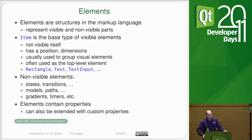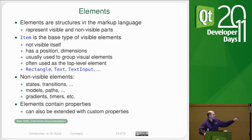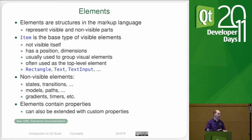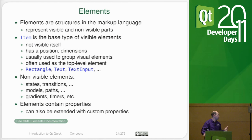So what are elements? Things like rectangles, text, and text input are all visual items, and visual items all inherit from a base type of element called Item. Item is the base class that provides things like X, Y, width, and height, and the ability to take up space on the screen. It is also the base for layouts and anchors. There are also some non-visual elements that we're going to be using, such as states, transitions, models, gradients, and timers — these types of things will be in your file as items but won't be displayed on the screen. They don't inherit from Item; they inherit from a thing called QObject.